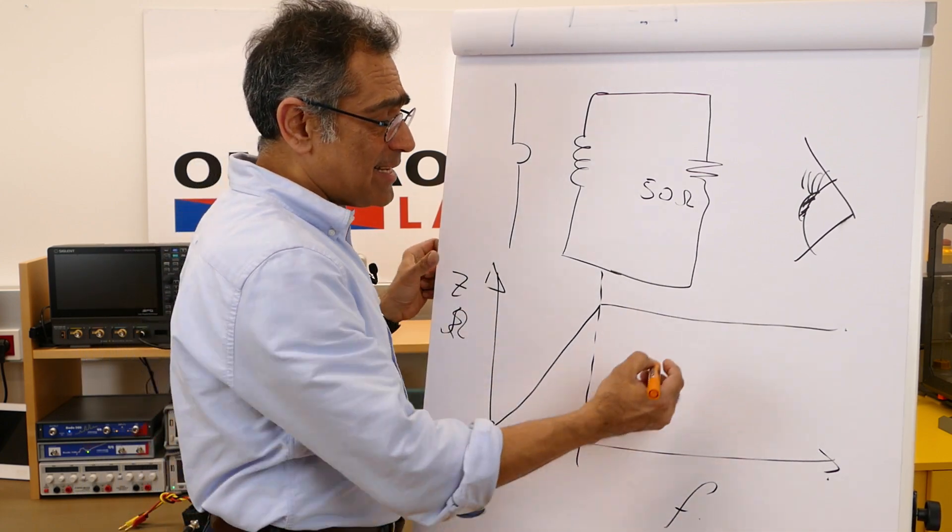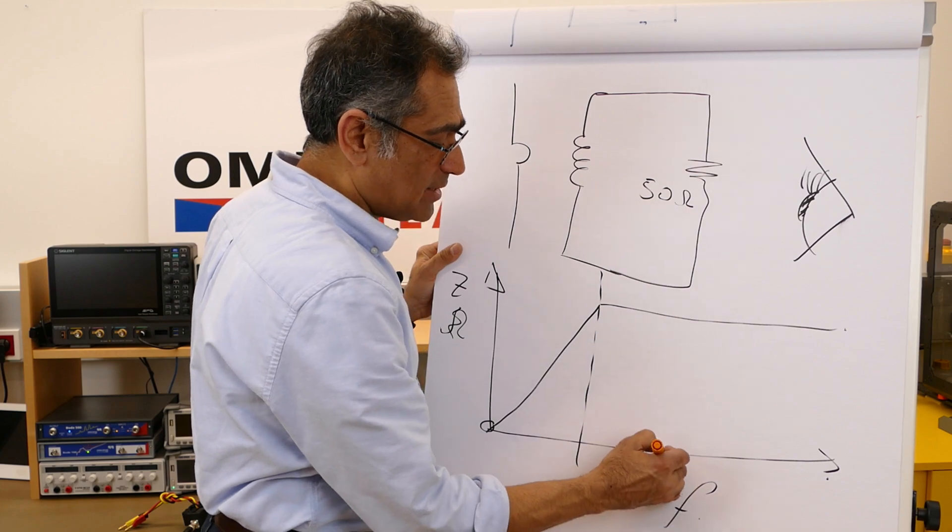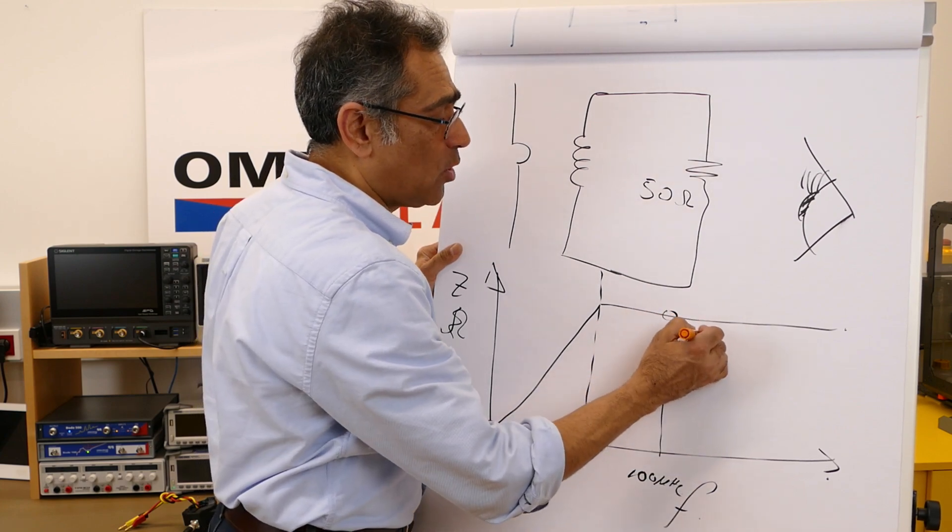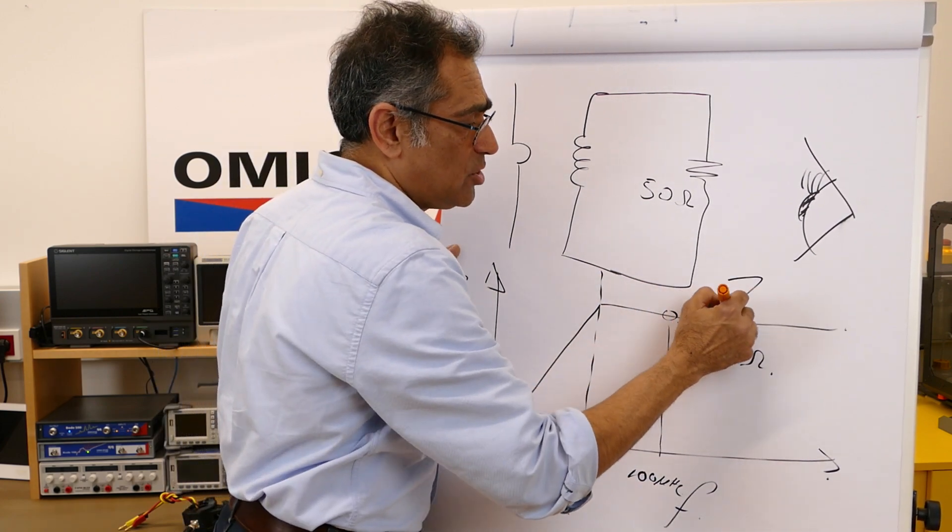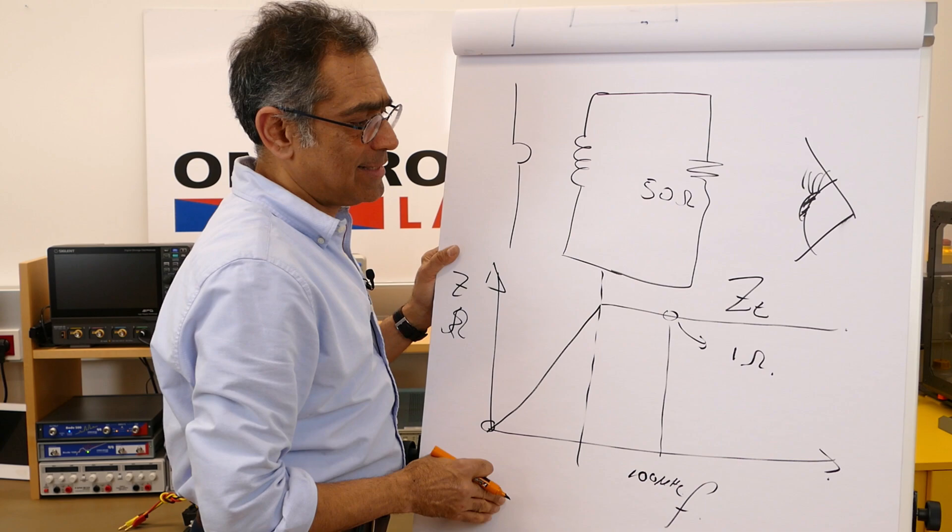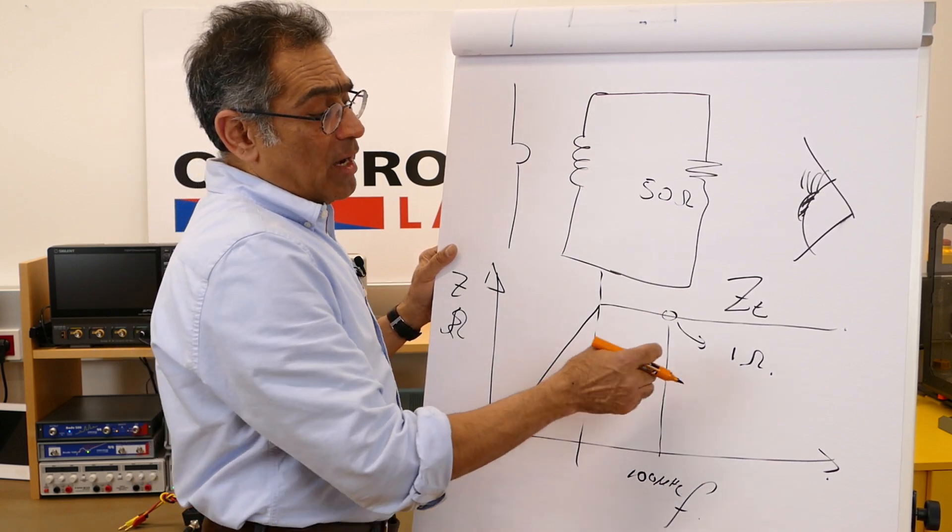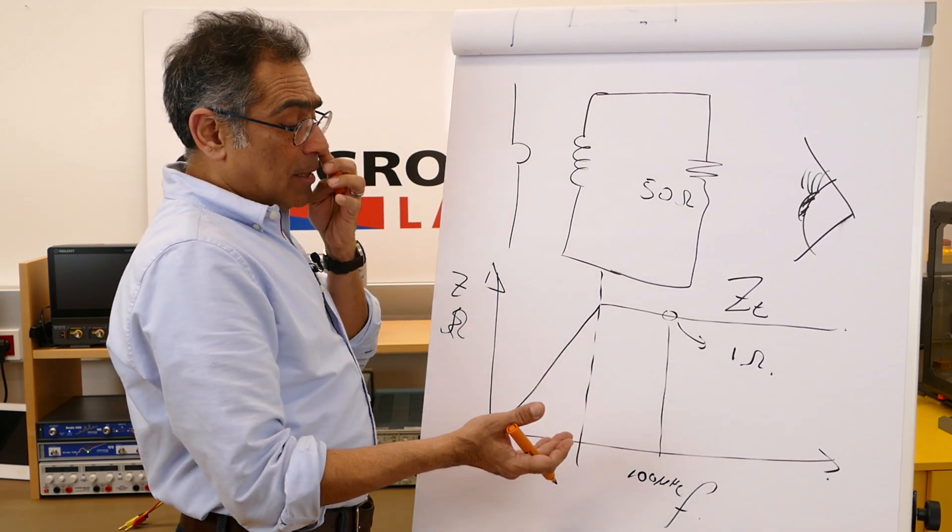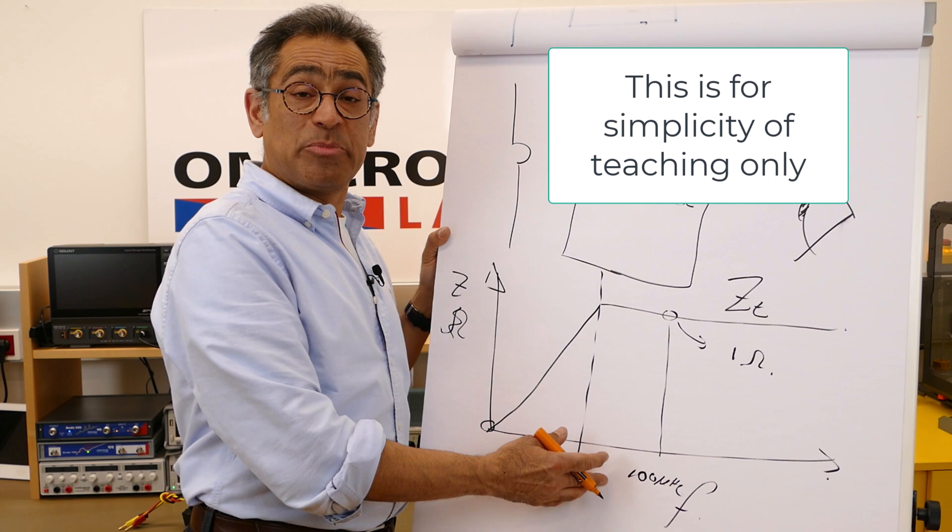For simplicity let us give an example here. Let us say that at 100 megahertz our plot says that the impedance at 100 megahertz is 1 ohm, and this is called the transfer impedance which is usually just written as ZT, and we know from the plot that we have got 1 ohm at 100 megahertz.